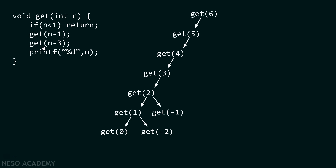From get(3) we have to call the get function with argument n minus three. As n equals three and three minus three is zero, control transfers from get(3) to get(0). The condition is satisfied and we return back to get(3), then return back to get(4). From get(4) we call the get function again — four minus three equals one — so control transfers from get(4) to get(1).